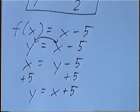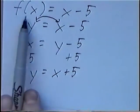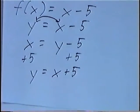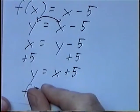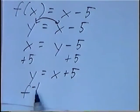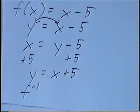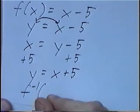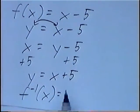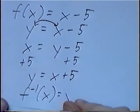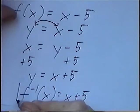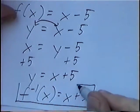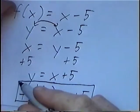To write this in proper notation, since we started with f of x, we want our answer in f of x form. So we write f, and adding a negative 1 exponent gives the inverse of f. So f to the negative 1 of x equals x plus 5. Our final answer: the inverse of f is equal to x plus 5.